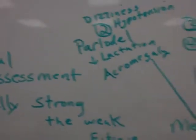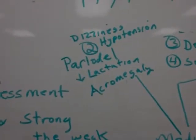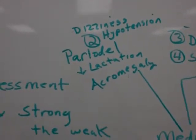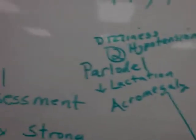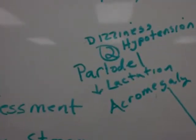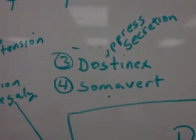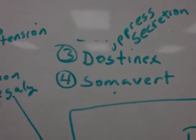We also have parlodel, which can be used to stop lactation brought about by excessive prolactin, and it's also used to treat acromegaly. With parlodel, we have to watch out for dizziness and orthostatic hypotension. A couple of other medications of use are Dostinex and Semavirt, which will also be used in the treatment of hyperpituitarism.